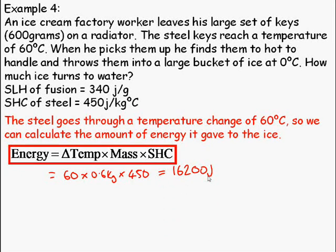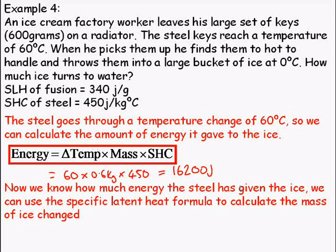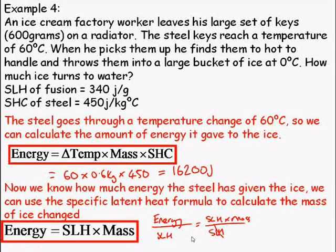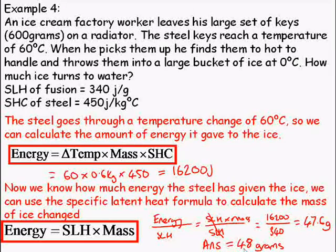Well, for the first part, I've broken down this question into two parts for myself. So now I have the amount of energy that the steel has given to the ice. So I can use the specific latent heat formula to calculate the mass that the ice changed. Rearrange this formula for mass. Mass is equal to energy divided by specific latent heat. So I take this energy, divide it by the specific latent heat of ice to find out how many grams of ice. And the answer I've rounded up is 48 grams of ice changed into water.